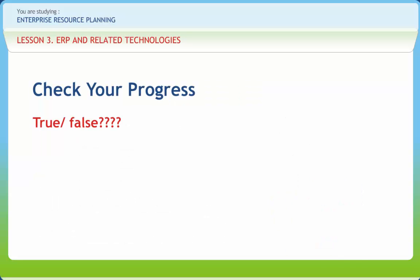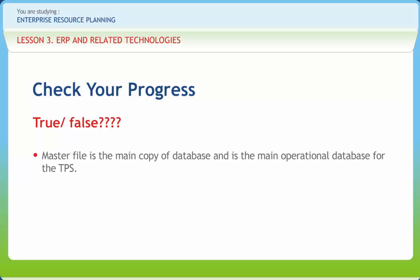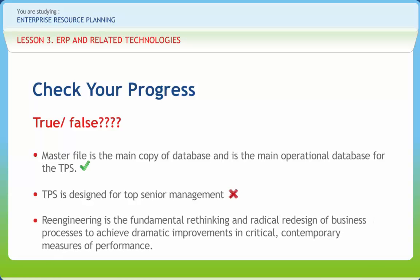Let us check our understanding. Master file is the main copy of the database and is the main operational database for the TPS — Right. TPS is designed for top senior management — Wrong. Re-engineering is the fundamental rethinking and radical redesign of business processes to achieve dramatic improvements in critical contemporary measures of performance — Right.